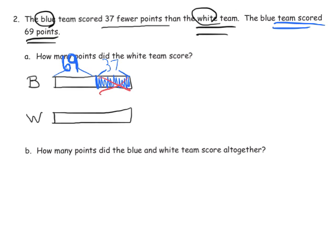So the question is, how many points did the white team score? So the white team is right here, which means we need to add, because this length here is the same as this combined length here. So the white, this combined, this big, huge tape diagram is going to be the result of 69 plus 37.